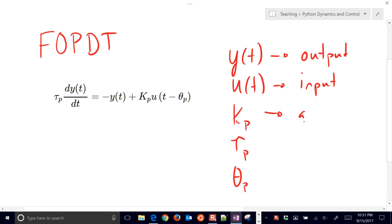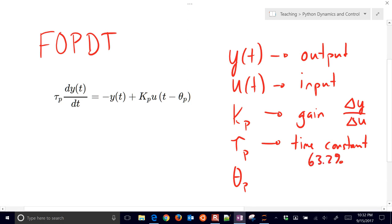Kp is going to be my gain, and that is my delta Y over delta U. At long time periods or between steady-state data points, that's called a gain. The TauP is called a time constant, and a time constant is basically how fast it takes to get from one steady state to the other. We're going to see something about 63.2% of the way there in one time constant. So it's about halfway there, one time constant will get you a little over halfway there. And then ThetaP is the dead time.